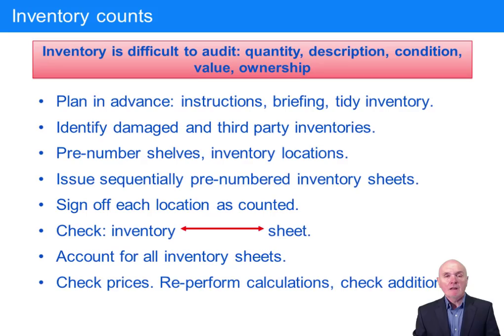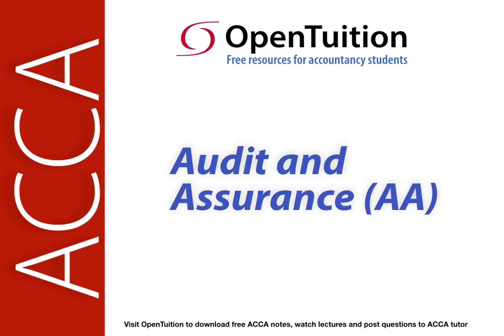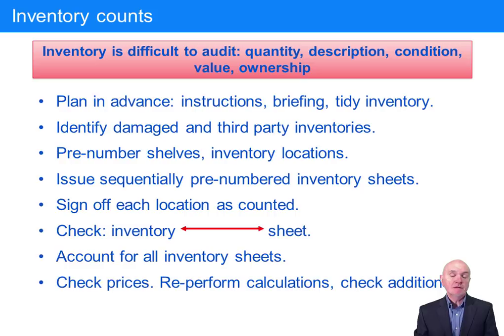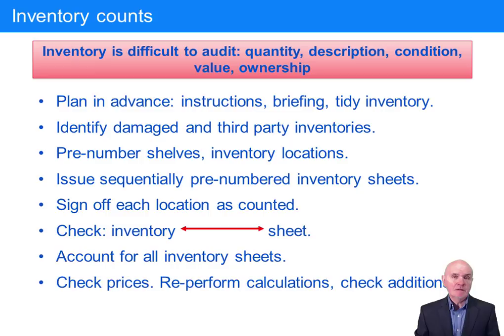Inventory is probably the most difficult area to deal with in an audit, leaving aside very complicated areas like you might find in banks and insurance companies. Inventory in any manufacturing company or retail business is also likely to be material. And inventory can be subject to risks — it can be stolen, it can go past its sell-by date, and there's always a risk that it becomes unfashionable and won't sell.